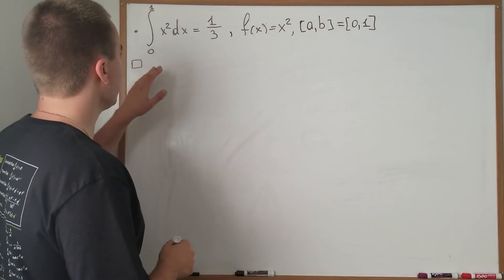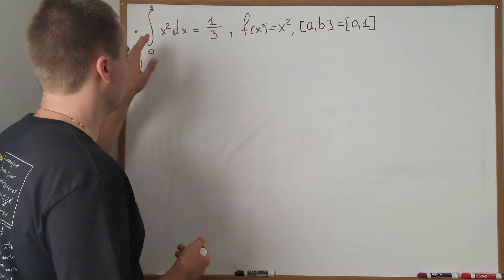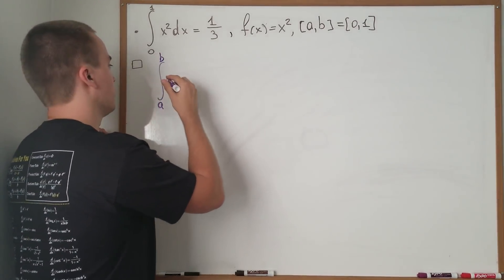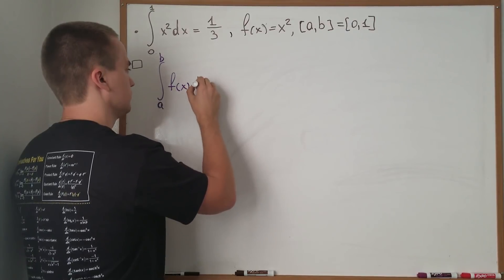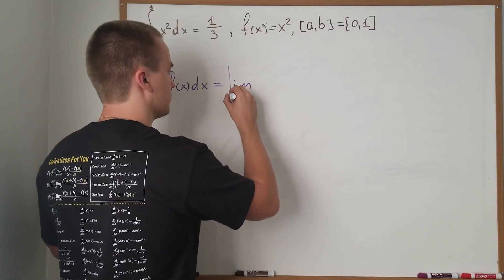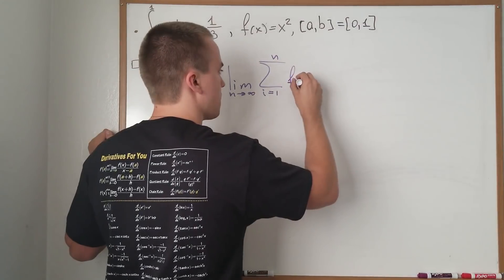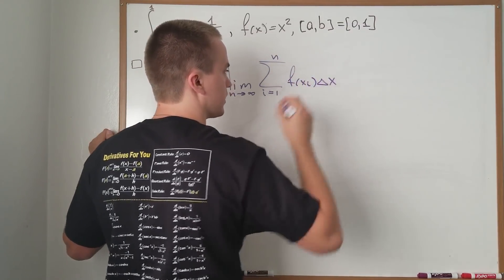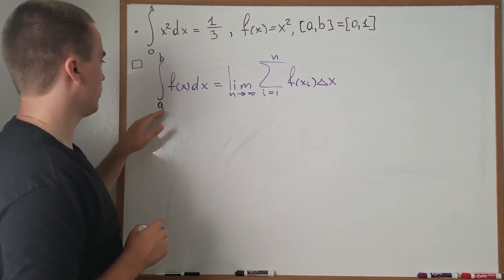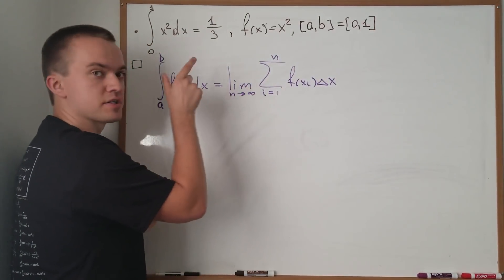Hello guys. If we want to find this definite integral, we need to recall first the definition of the definite integral by using Riemann summation. We say that the definite integral from a to b of f(x) dx can be written as the limit of the partial sums, where we take the sum of f(xᵢ) times Δx. In this case our function is x squared and our a and b are just 0 and 1, and we're going to apply this definition.